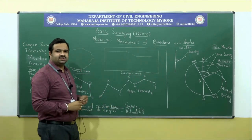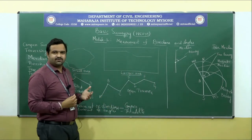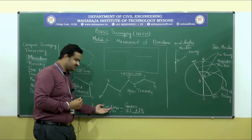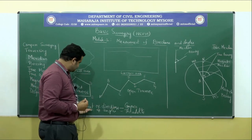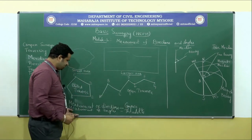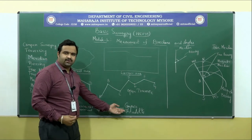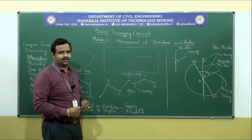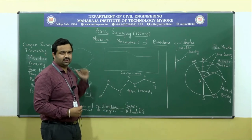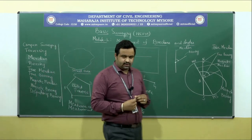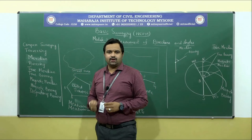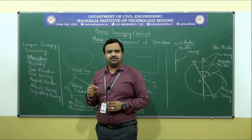What are the different types of instruments used to measure the direction? To measure the direction, the instrument used is compass. And to measure the angles, we have an instrument called theodolite. I will be dealing about the compass in this particular unit. These are some basic concepts required for compass surveying and traversing.